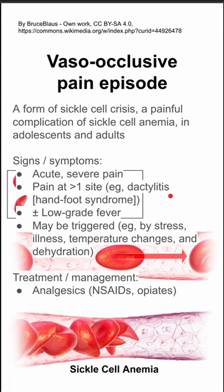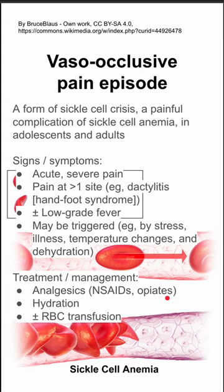The treatment and management of vaso-occlusive pain episodes: analgesics first — you can give NSAIDs or opiates. This is real pain in patients, so don't hesitate to give opiates. Keep these patients hydrated, and in severe cases, you can consider red blood cell transfusion.